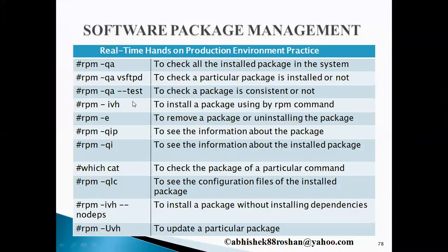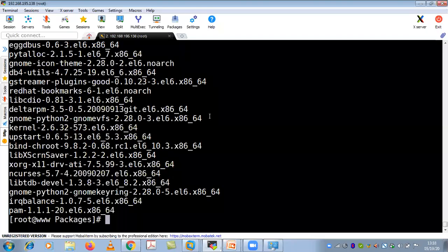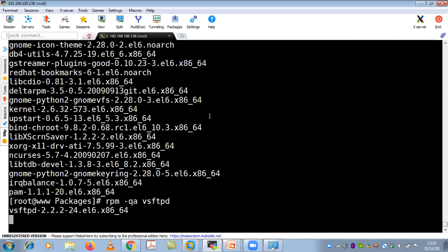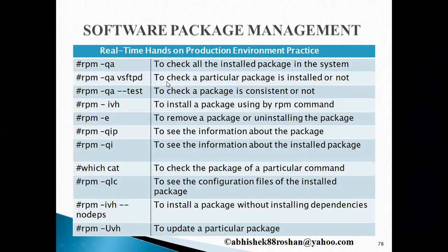The next command: if you want to see whether a particular package is installed, for example VSFTPD — which is used to configure an FTP server — you just run 'rpm -qa vsftpd'. If it returns the full package name, that means the package is installed. This is how you check whether a particular package is installed or not.